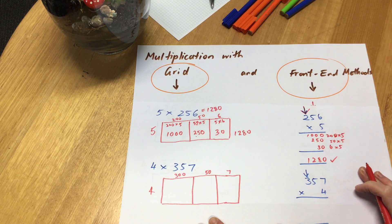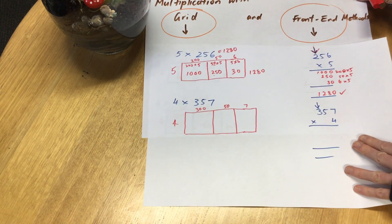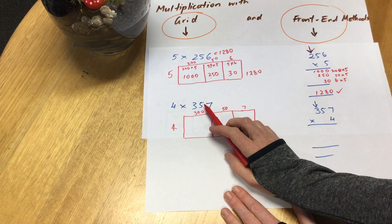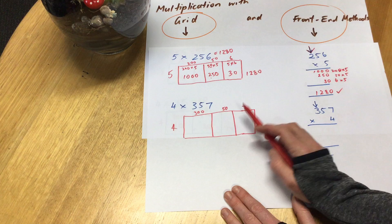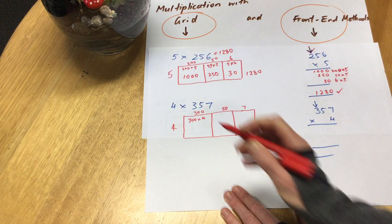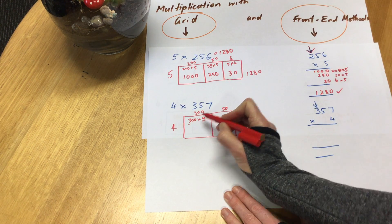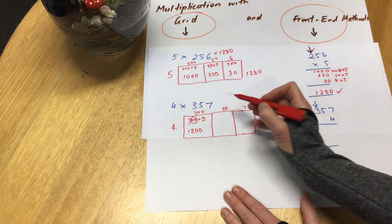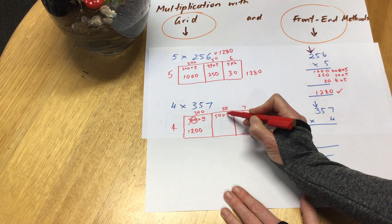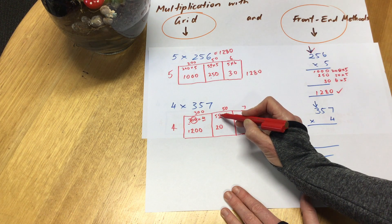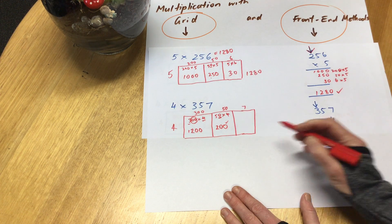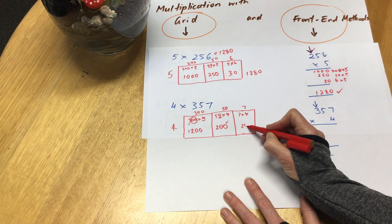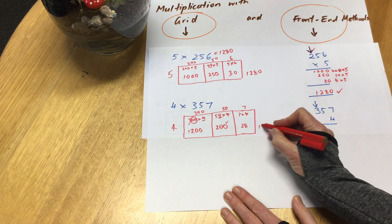Alright, let's have a look at this one over here. Grid method first, got 4 times 357. In my head I am working out 300 by 4. I know 3 fours are 12, but I'm talking about hundreds, so it's 1200. Here I've got 50 times 4. 5 fours are 20, but we're talking about tens here, 5 tens, so I can't forget my tens, that's 200. Then I've got 7 fours, which are 28. I'm adding them all up together, so I've got 1428.